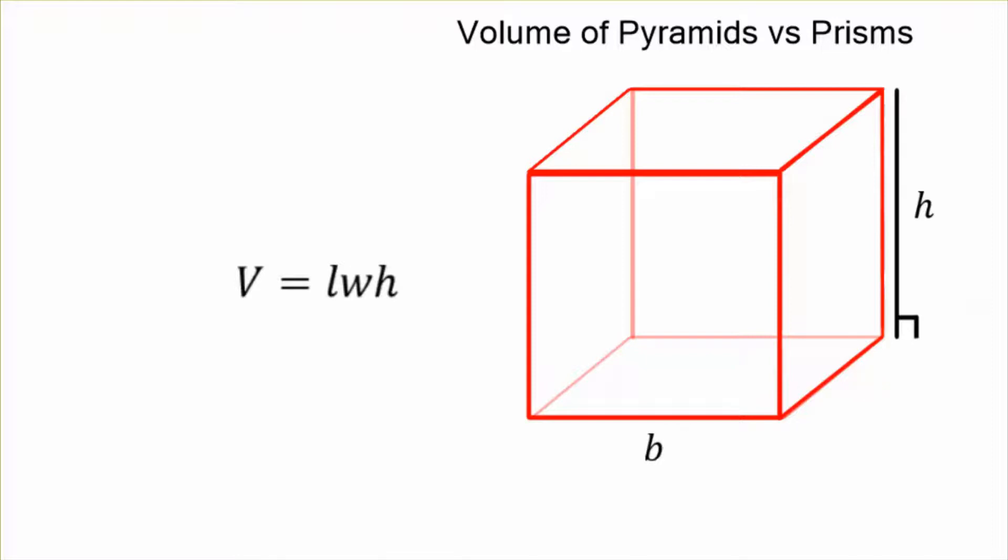But we don't call it length and width anymore, we call that base and height for a rectangle, which gets very confusing. Our base is going to be base times height, little b base, little h height. I'm going to use capital H for the height of the entire prism.